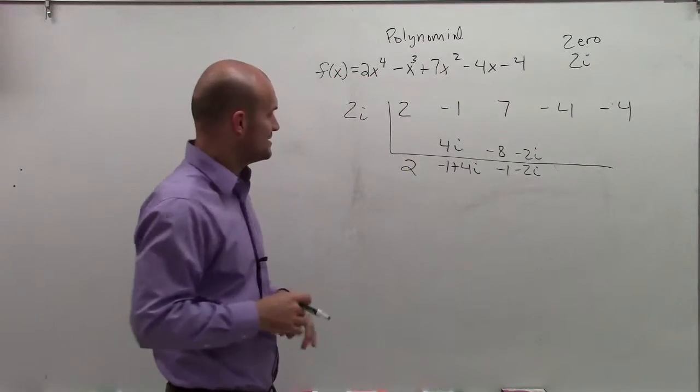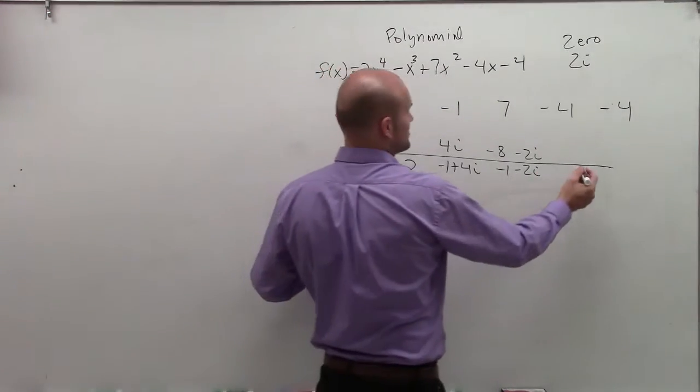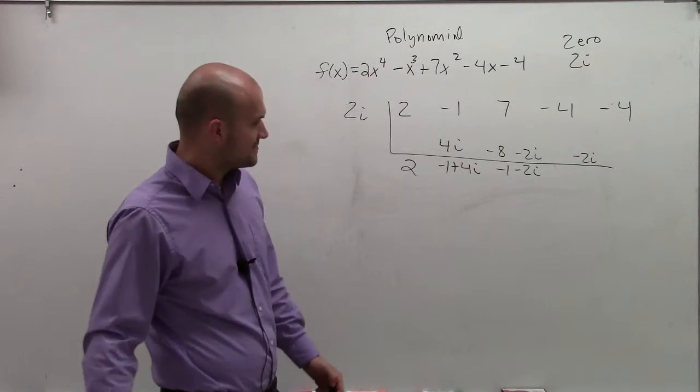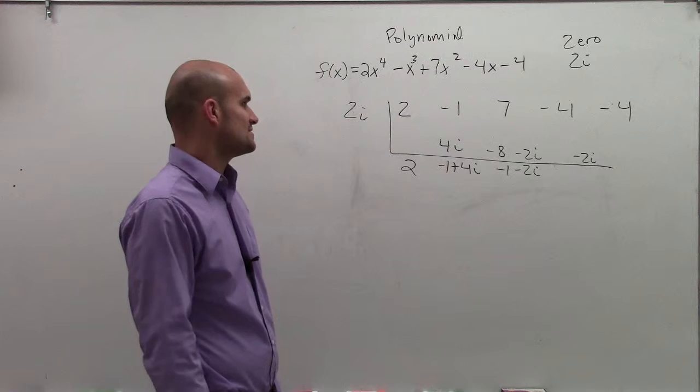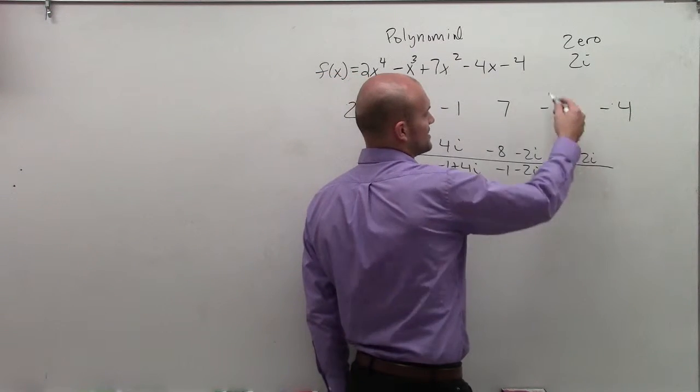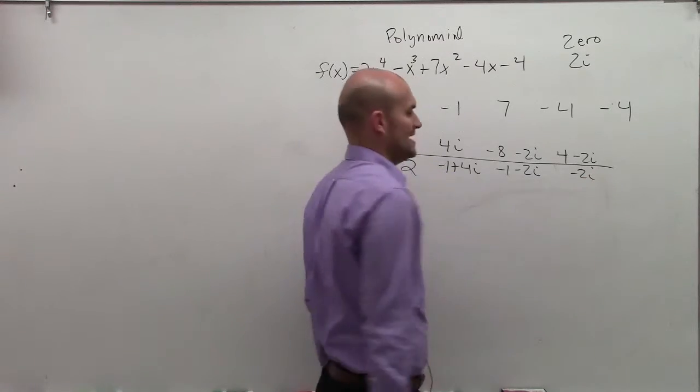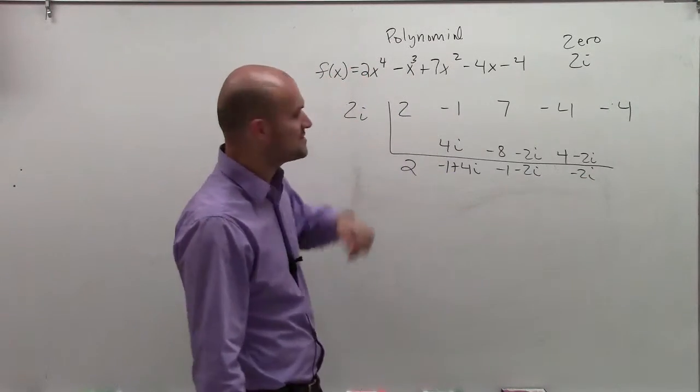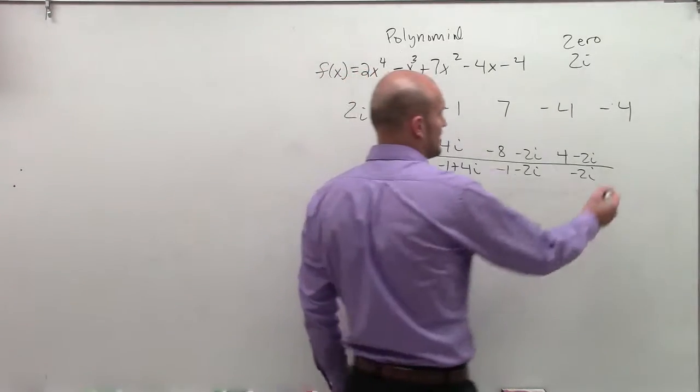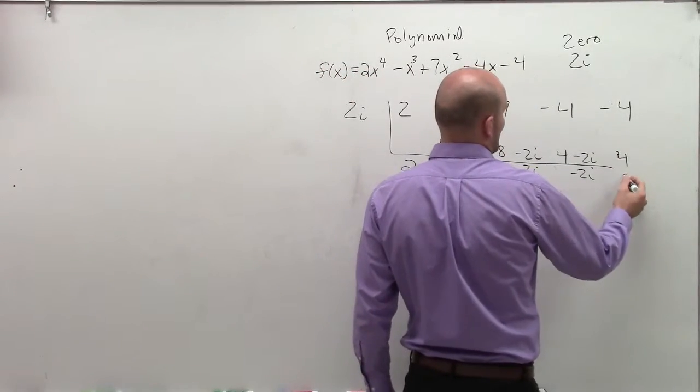Negative 1 minus 2i times 2i is going to give me negative 2i, and then 2i times negative 2i. 2 times negative 2 is negative 2. i squared is going to give me negative 1, that's going to give me positive 4, which leaves me with negative 2i. Negative 2i times 2i gives me negative 4i squared, which leaves me with positive 4. Add them, get a 0.